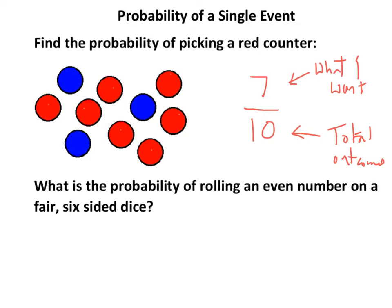The second one says, what is the probability of rolling an even number on a fair six-sided dice? So the numbers I get on a dice are one, two, three, four, five, and six. Which ones are even? Well, there's three of those out of a total of six.